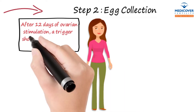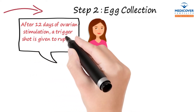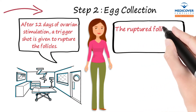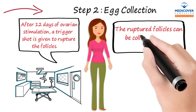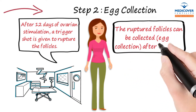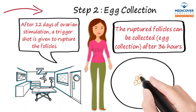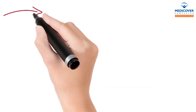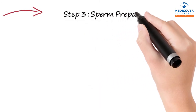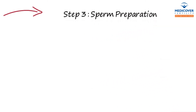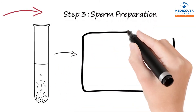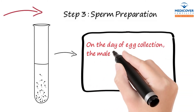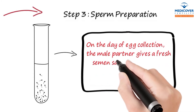Step 2: Egg collection. After 12 days of ovarian stimulation, a trigger shot is given to rupture the follicles. The eggs from the ruptured follicles are then collected after 36 hours.